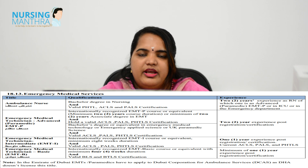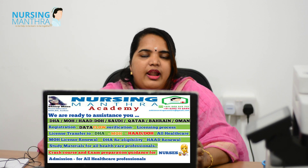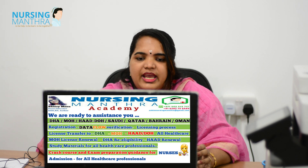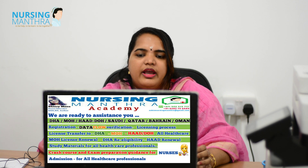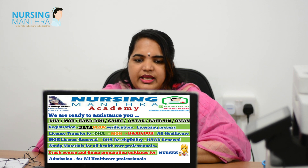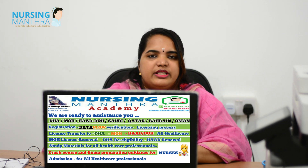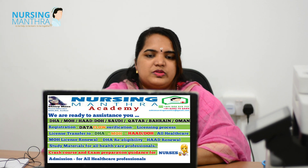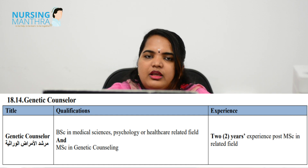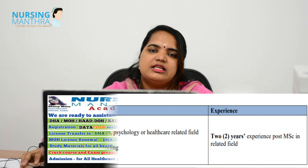For EMT Technician, international ARTCC certification is important. Another allied health category is Genetic Counselor. A Genetic Counselor should have a BSc in Medical Science, BSc in Psychology, or a healthcare-related field, plus an MSc in Genetic Counseling. After completing the MSc in Genetic Counseling speciality, 2 years of experience in the settings is required before working as a Genetic Counselor.